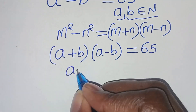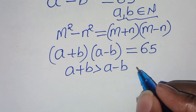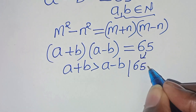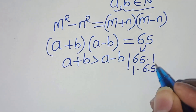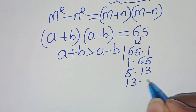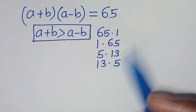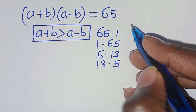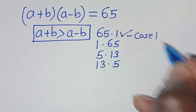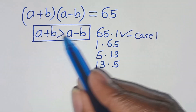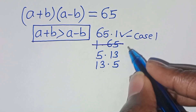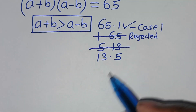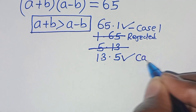We have that a plus b is greater than a minus b. So, the next step is to get the factor pairs of 65. We have 65 times 1, we have 13 times 5. Given that a plus b is greater than a minus b, we have that 65 times 1 satisfies this condition, so we call this case 1. Then 13 times 5 is also accepted, so we have case 2.